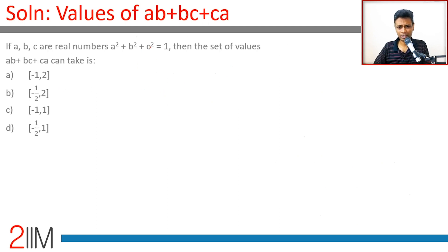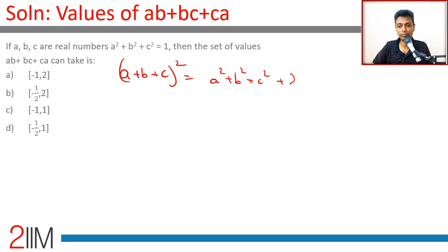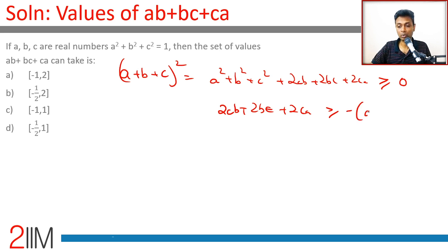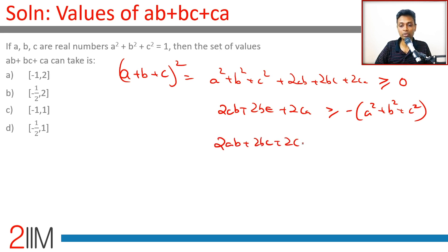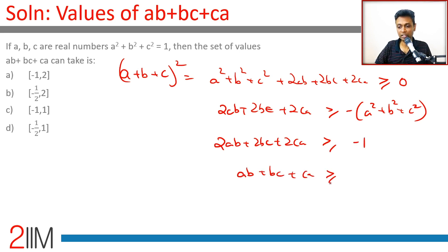Let's approach it differently. Consider (a + b + c)² ≥ 0, which expands to a² + b² + c² + 2ab + 2bc + 2ca ≥ 0. This gives 2(ab + bc + ca) ≥ -(a² + b² + c²), so ab + bc + ca ≥ -1/2. Therefore ab + bc + ca ranges from -1/2 to 1 — an absolutely delightful result.